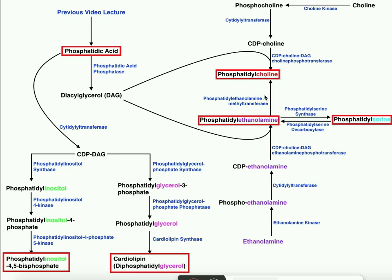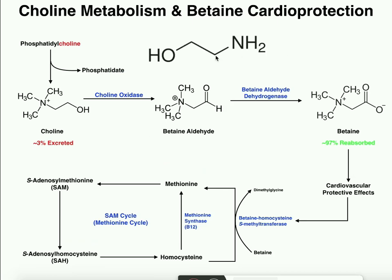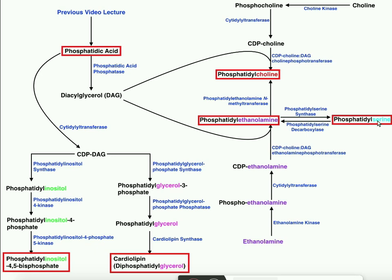Unlike the one-directional conversion from ethanolamine to choline, phosphatidylserine can actually be converted back to phosphatidylethanolamine by phosphatidylserine decarboxylase. If you look at the chemical structure of serine, there is a carboxyl group off of that carbon. If you take the serine and decarboxylate it — removing the carboxyl group as CO₂ — all that remains is ethanolamine. So you can interconvert between these two phospholipid types using these two enzymes, whereas you cannot interconvert between phosphatidylethanolamine and phosphatidylcholine.